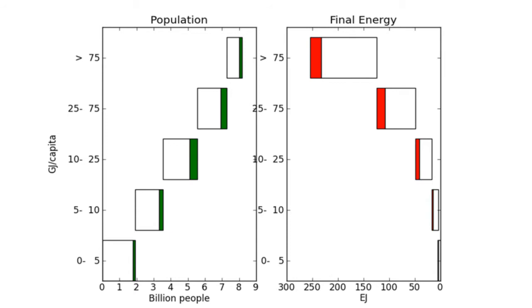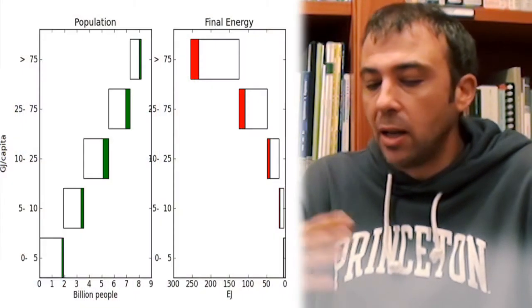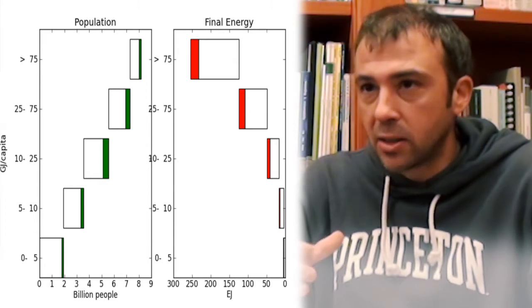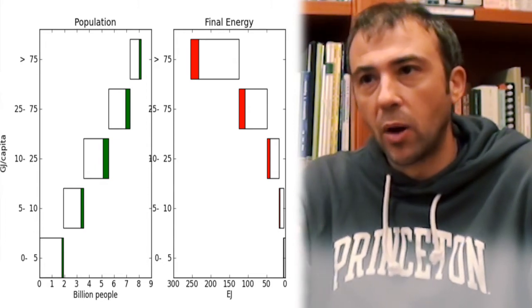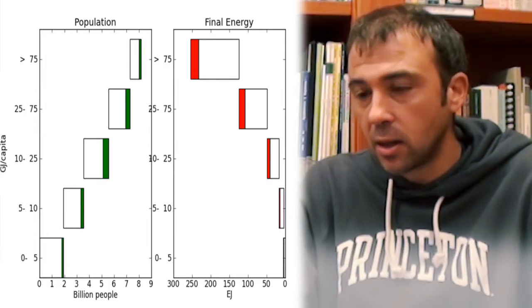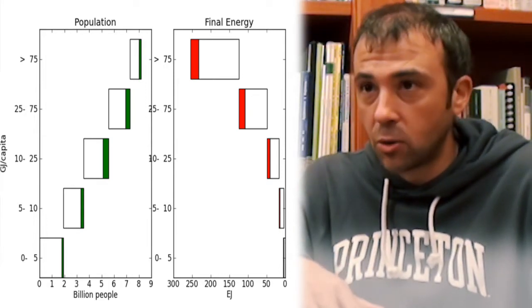From this chart you can see that about two billion people are below the basic human needs category level — about two billion people are energy poor according to this method. Then we have one billion people in the second category, and another one billion people further up. From now to 2030, very little change will happen at the bottom, unfortunately.